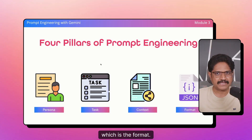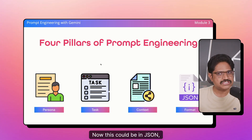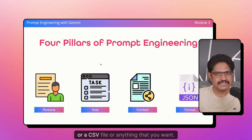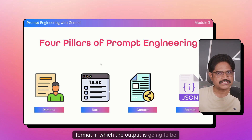And finally, how — which is the format. Once you define all three pillars, then comes the format of the outcome. This could be in JSON, XML, or a Pydantic class, a Python list, a CSV file, or anything that you want. This is where you will define what format the output is going to be delivered in.